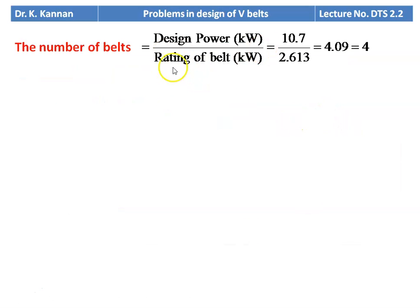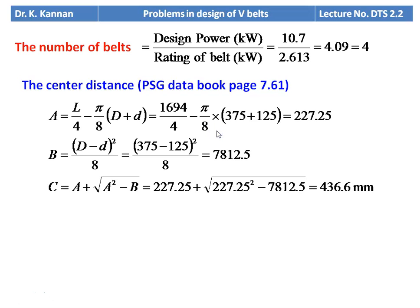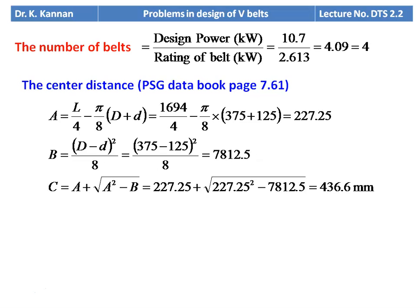Number of belts = design power / power rating = 10.7 / 2.613 = 4.09, rounded to 4. Actual center distance using equation from page 7.61: A = L/4 − (π/8)(D + d) = 1694/4 − (π/8)(375 + 125) = 227.25; B = (D − d)²/8 = 7812.5; C = A + √(A² − B) = 436.6 mm. This is less than 1 meter, which is acceptable.